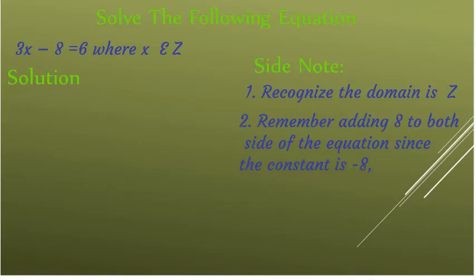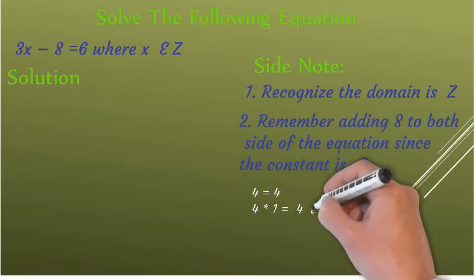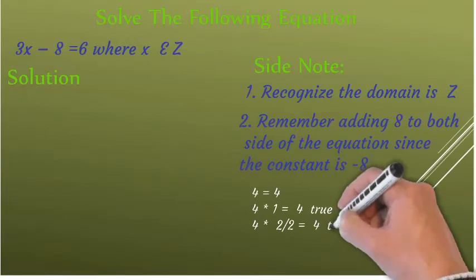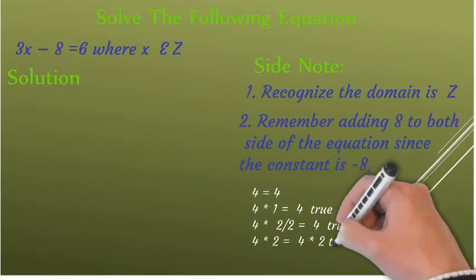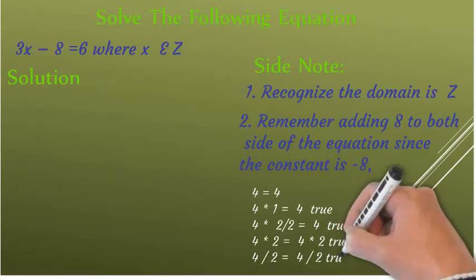Now I'm going to give you another fact. 4 is always the same as 4. If we multiply 4 by 2 over 2 — which equals 1 — the statement doesn't change; it's still going to be true. Similarly, if we multiply both sides of the equation by the same number, it's still going to be true. Our main focus is to keep the statement always true by adding, dividing, or multiplying both sides of the equation by the same number.